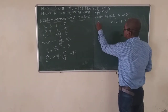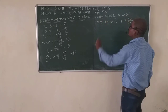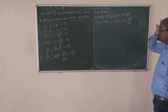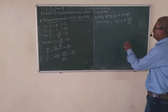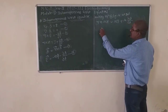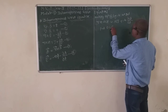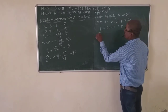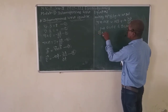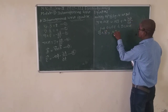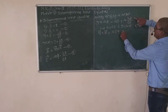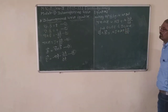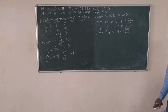Multiplying equation 4 by mu: mu times (del cross H) equals mu*J plus mu*(dD/dt). We know the relations B equals mu*H and D equals epsilon*E. Substituting, del cross B equals mu*J plus mu*epsilon*(dE/dt).